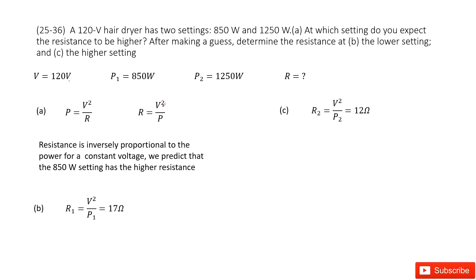Now we can see the V potential difference is fixed. The only changing variable is P. From this equation, we can see the resistance is inversely proportional to the power at constant voltage.